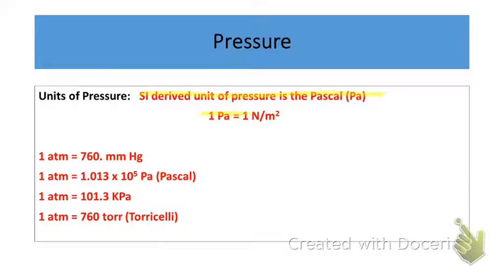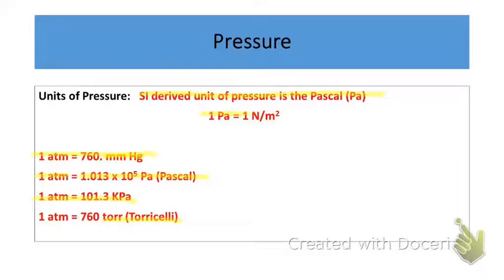Pascals are not the only unit we will use for pressure. We will also use the atmosphere, abbreviated ATM. One atmosphere is equal to 1.013 × 10⁵ pascals, or equivalently, 101.3 kilopascals. Pascals and atmospheres are probably used the most, but once in a while we'll also use units of millimeters of mercury and torr. There are 760 millimeters of mercury equivalent to one atmosphere.